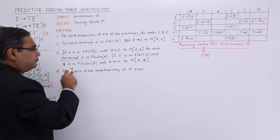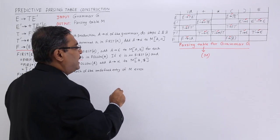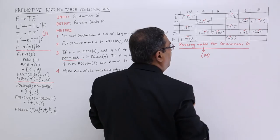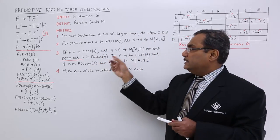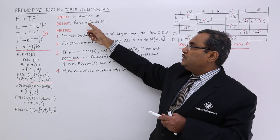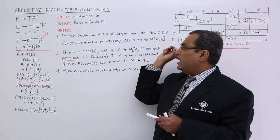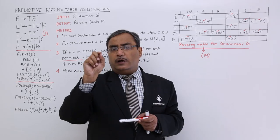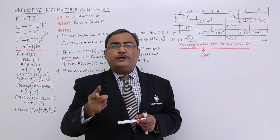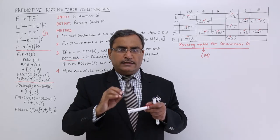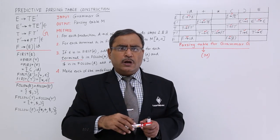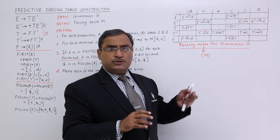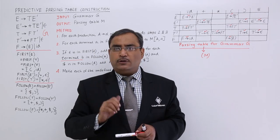In this way I have completed all the rules. The last rule is: make each undefined entry of M as error. So if any time we want to retrieve something from an undefined cell like E'[ID], that means the parsing cannot be continued because an error has taken place. In this way the parsing table has been constructed — input is grammar G, output is parsing table M. This is known as the predictive parsing table, meaning there will be no ambiguity and no backtracking. I will discuss how predictive parsing works in the next video. Please watch the next video as a continuation of this lesson. Thanks for watching.